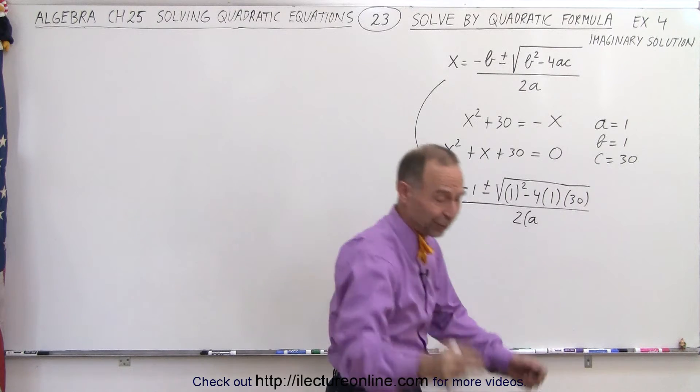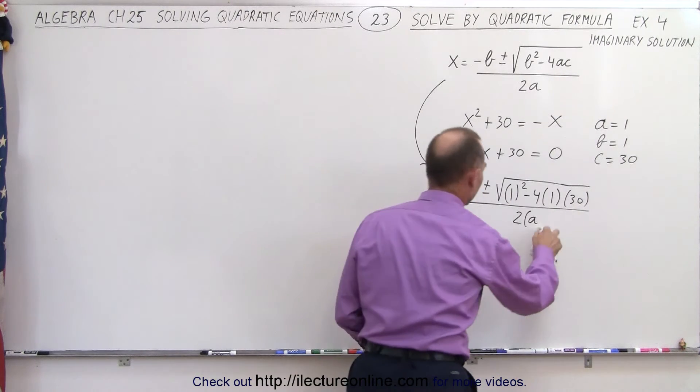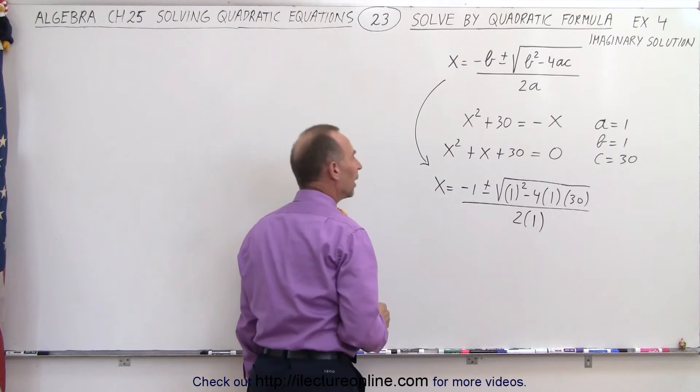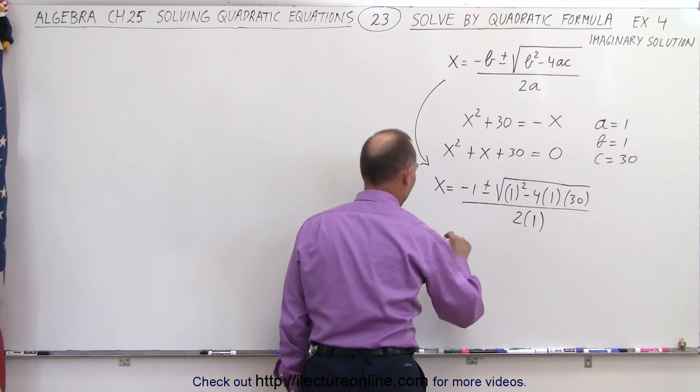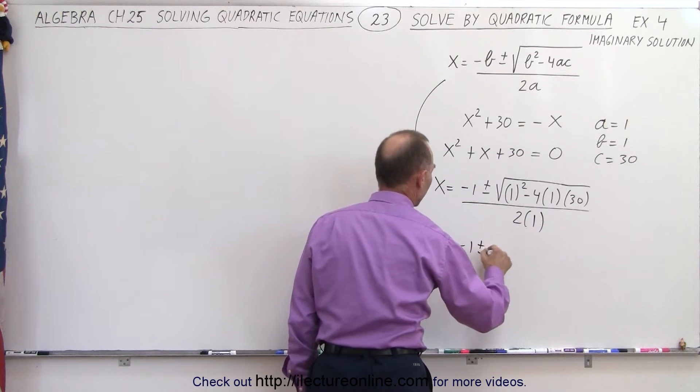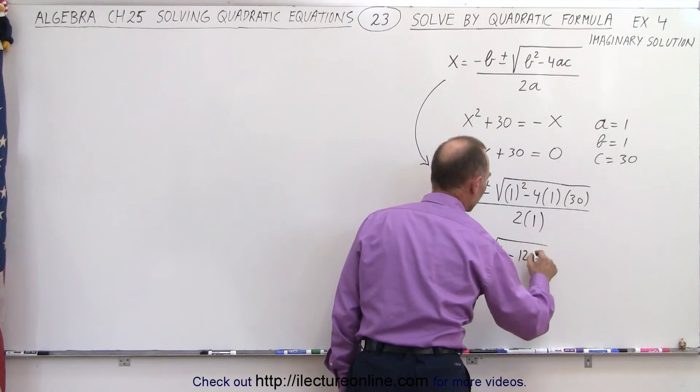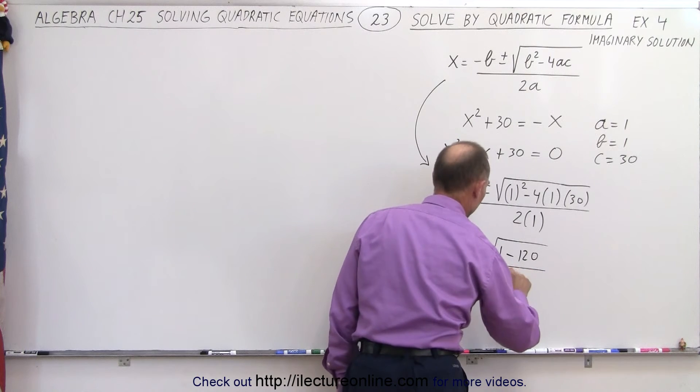I wrote a, and of course I should have written a 1, because a is equal to 1. All right, simplifying that, we get x is equal to minus 1 plus and minus the square root of 1 minus 4 times 30, which is 120, all divided by 2.